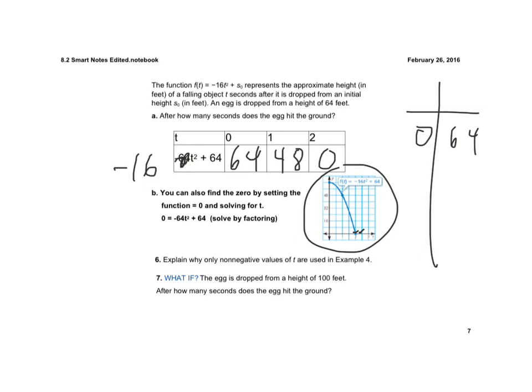It says explain why only non-negative values of t are used. Well, t represents time, so we wouldn't use negative numbers for time.